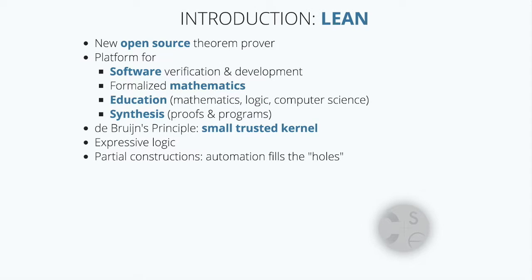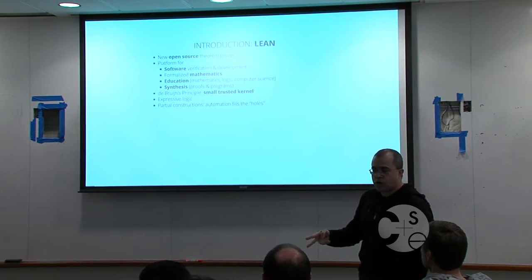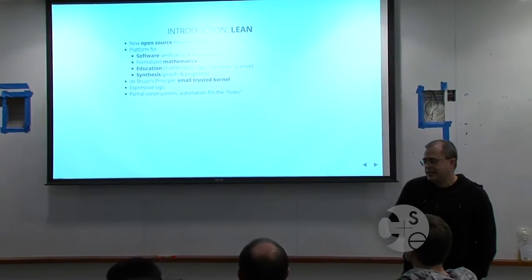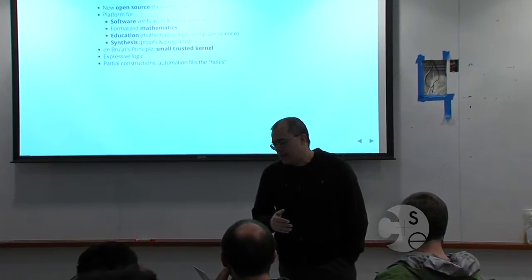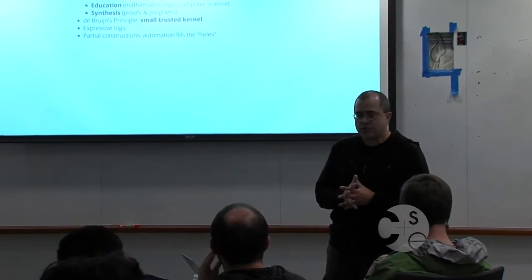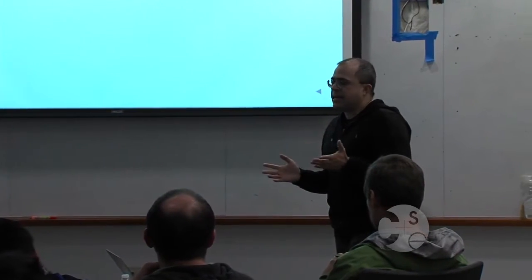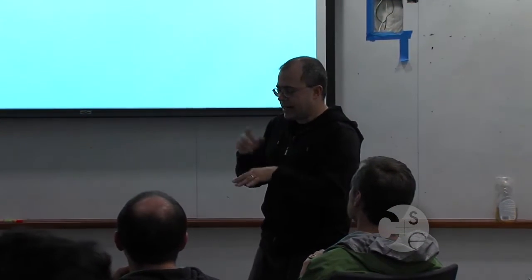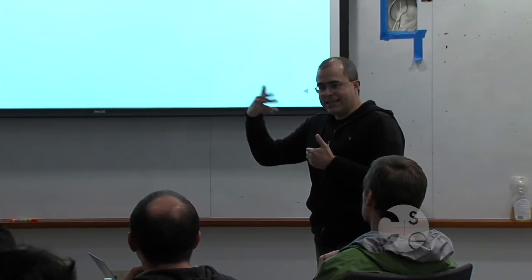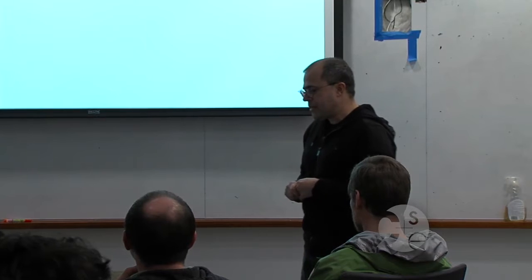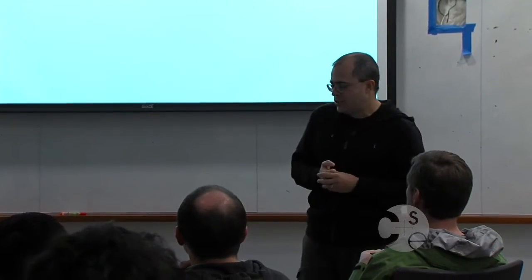What is Lean? Lean is a new open source theorem prover. We want it to be a platform for software verification, a platform for formalized mathematics. One application we have in mind is education. Lean has been used already for two courses at CMU: one about theorem proving in type theory, and another one introduction to logic. The nice thing about these courses is that they are self-contained — students can go to a website where all exercises and examples are live and interactive. Lean runs inside your browser, so the student doesn't need to install anything.